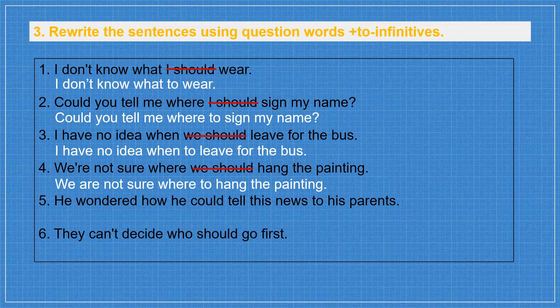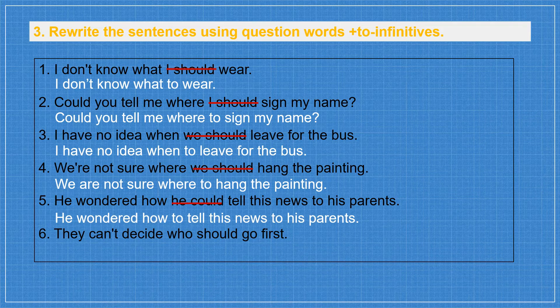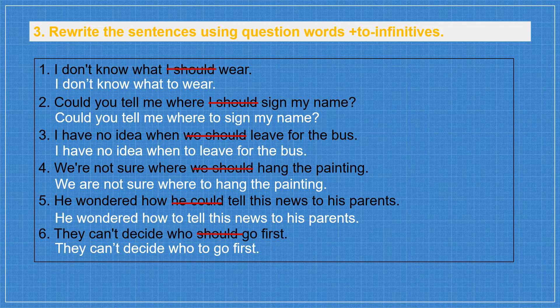Number 5: 'He wondered how he could tell this news to his parents.' Number 6: 'They can't decide who should go first' → 'They can't decide who to go first.'